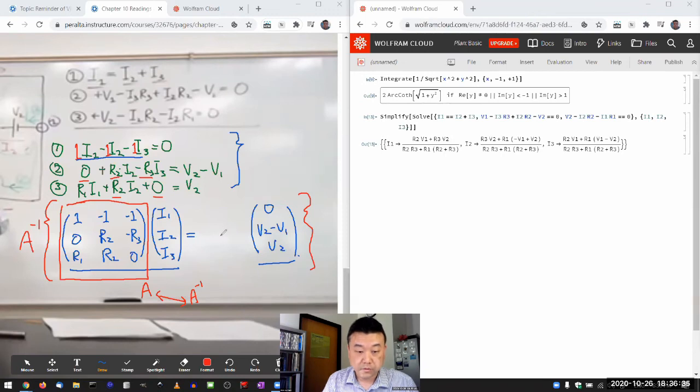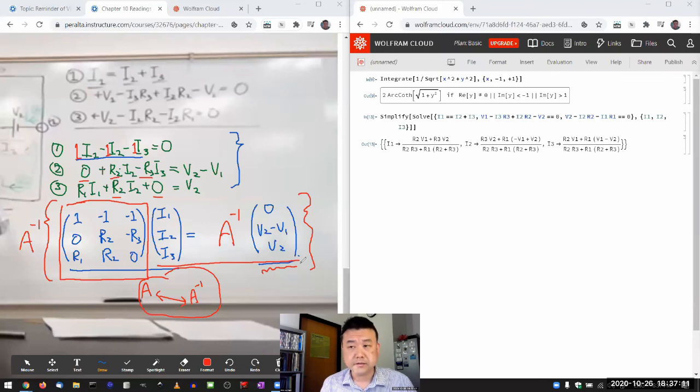So get I1, I2, I3 equal to the A inverse times the, I don't know what this is called, this column vector. I don't know what it's called, the constant vector. Anyways, so if you have access to a system that can take inverses of matrices for you, then solving this system of equations can be done in this very automatic, programmatic way. And the system that can take inverses of matrices for you is computer algebra system. That's kind of the key feature of a computer algebra system.